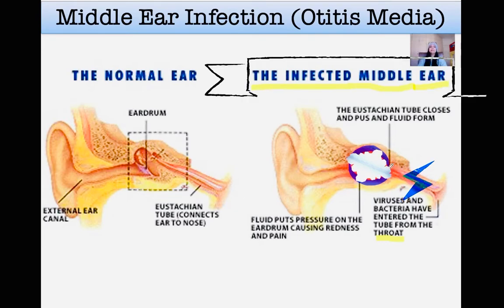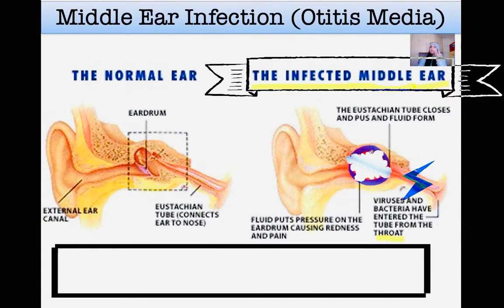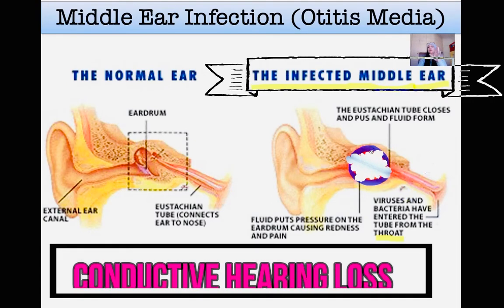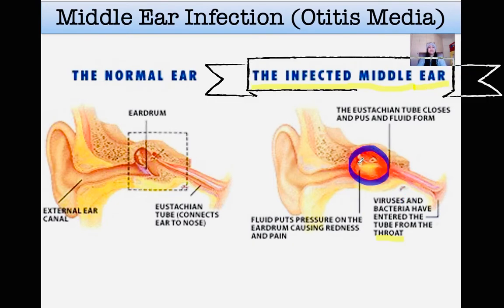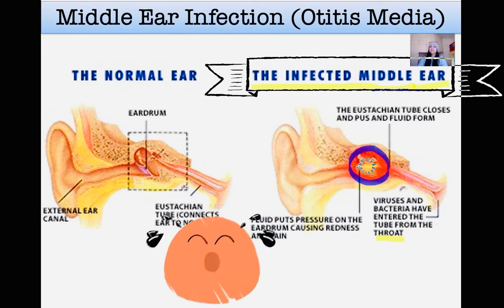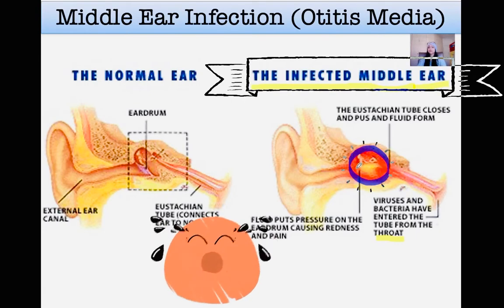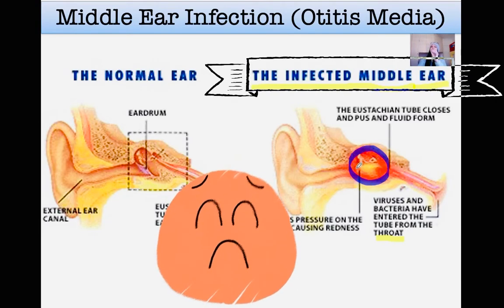The buildup of fluid or discharge in the middle ear causes conductive hearing loss, because pressure builds up within the middle ear preventing the ossicles from vibrating. This fluid buildup also puts pressure on the eardrum, causing it to tear. This leads to a lot of pain and inflammation in the middle ear. We must remember that damage to a child's hearing will affect the child's speech and language development.